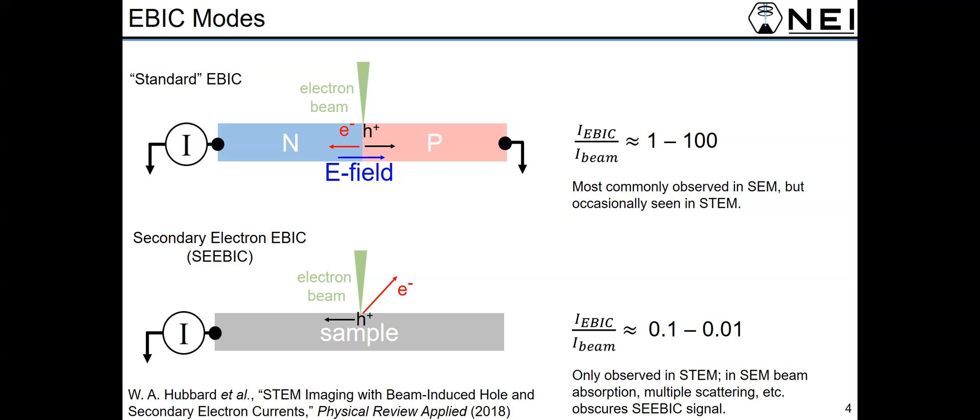The electron beam generally gets absorbed into the sample to a large degree. You also have multiple scattering events like backscattered electrons coming back up and generating many more secondary electrons. And all these other processes seem to obscure this kind of primary beam generation of secondary electrons that SEEBIC measures.